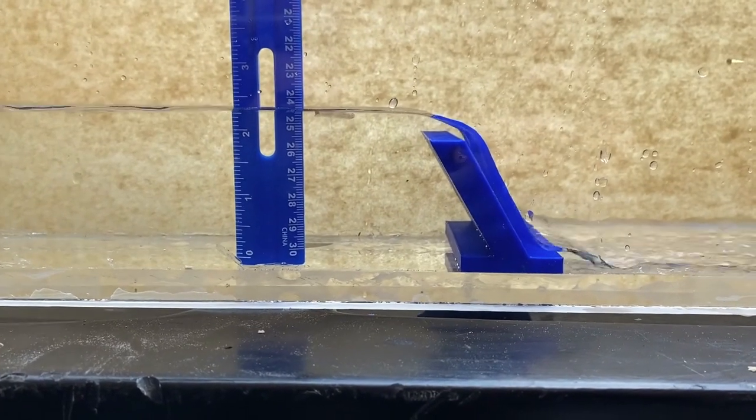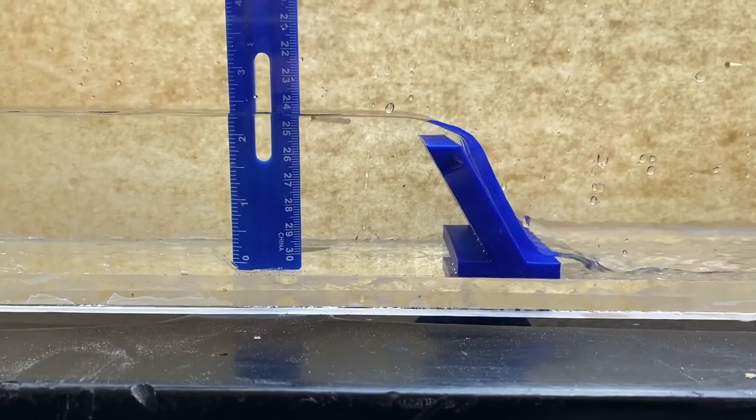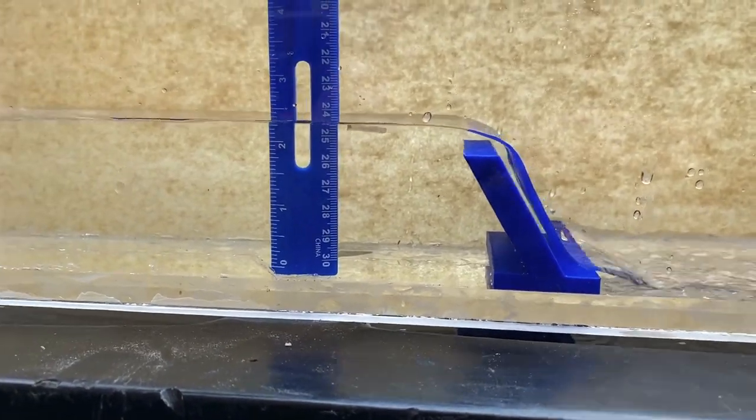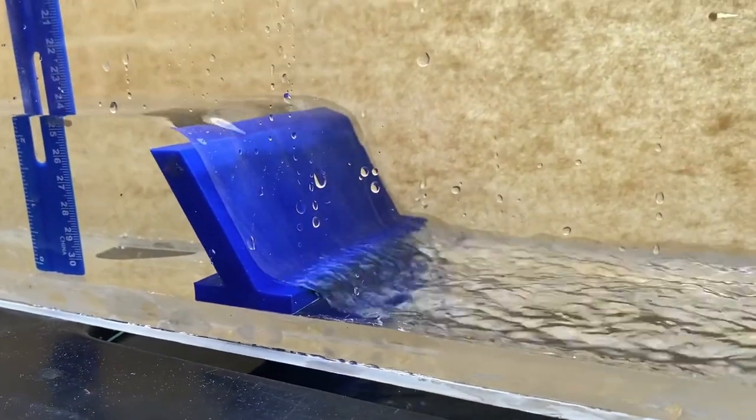Our final experiment was to put the weir at an angle. When angled 30 degrees upstream from vertical, the weir acted as if it was catching the water, leading to a greater height and lower coefficient.